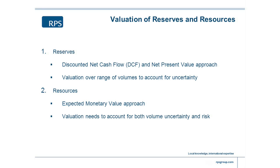When it comes to resources, we have to include not just uncertainty but also the risk — the chance of not finding anything at all, in other words, the chance of getting a dry hole. The method used is fairly standard in the upstream sector: the expected monetary value approach. It's still basically the discounted cash flow method with net present value, but with risk applied. We still go through the same process of valuing the volumes as if we discovered them, then apply the risk afterwards.